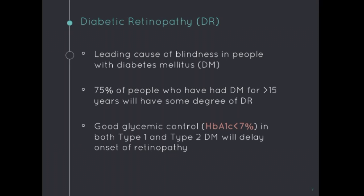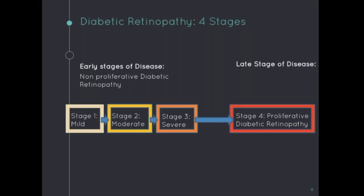DR has four stages. Stages 1 through 3 delineate the progressive stages of severity in non-proliferative DR, abbreviated as NPDR. Then we come to stage 4, which is termed proliferative diabetic retinopathy, abbreviated as PDR. The key difference from the non-proliferative stages is the presence of VEGF-induced new blood vessel growth, secondary to retinal ischemia.